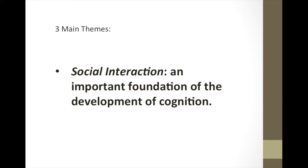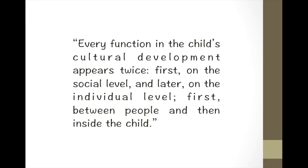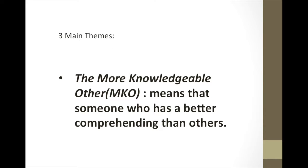One of the three main themes is social interaction. Social interaction is an important foundation of the development of cognition. Vygotsky thought social learning anticipates development. He states that every function in a child's cultural development appears twice: first on the social level, and later on the individual level — between people and then inside the child. He believes that young children are curious and actively involved in their own learning and the development of new understandings.